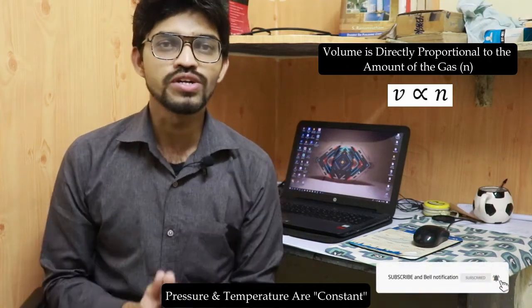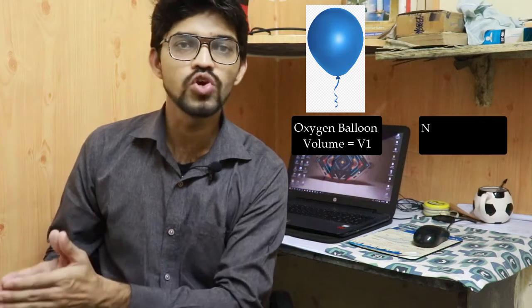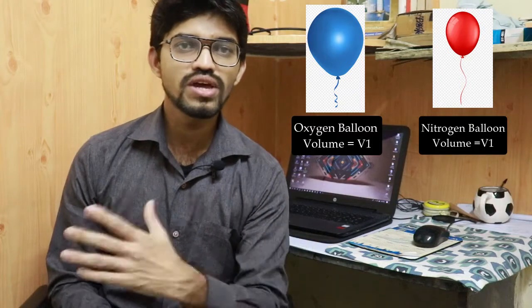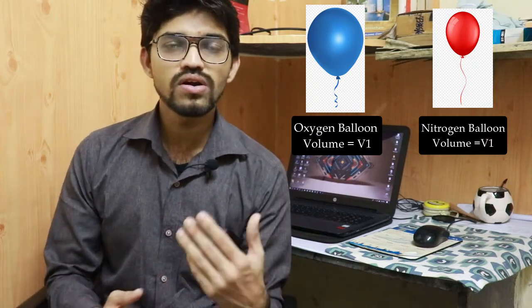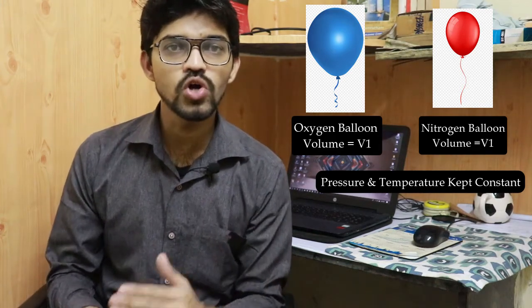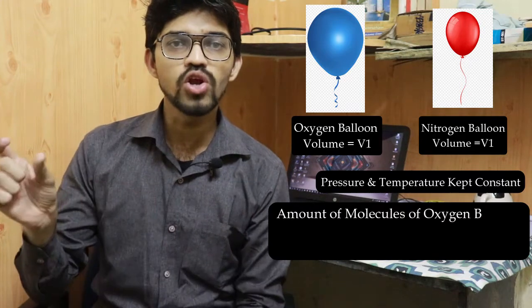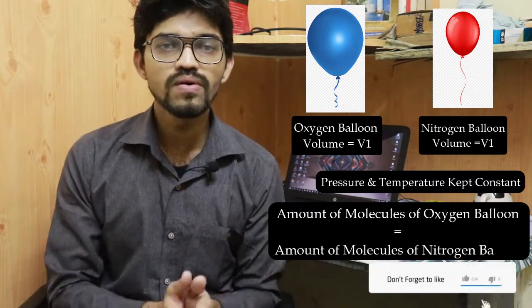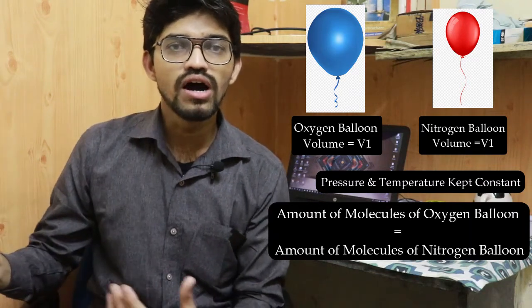For example, suppose I have a balloon filled with oxygen having volume V1, and another balloon filled with nitrogen also having the same volume V1. Under constant pressure and constant temperature, Avogadro's law tells us that the number of molecules of oxygen equals the number of molecules of nitrogen. Therefore, the number of moles in the oxygen balloon is the same as the number of moles in the nitrogen balloon.